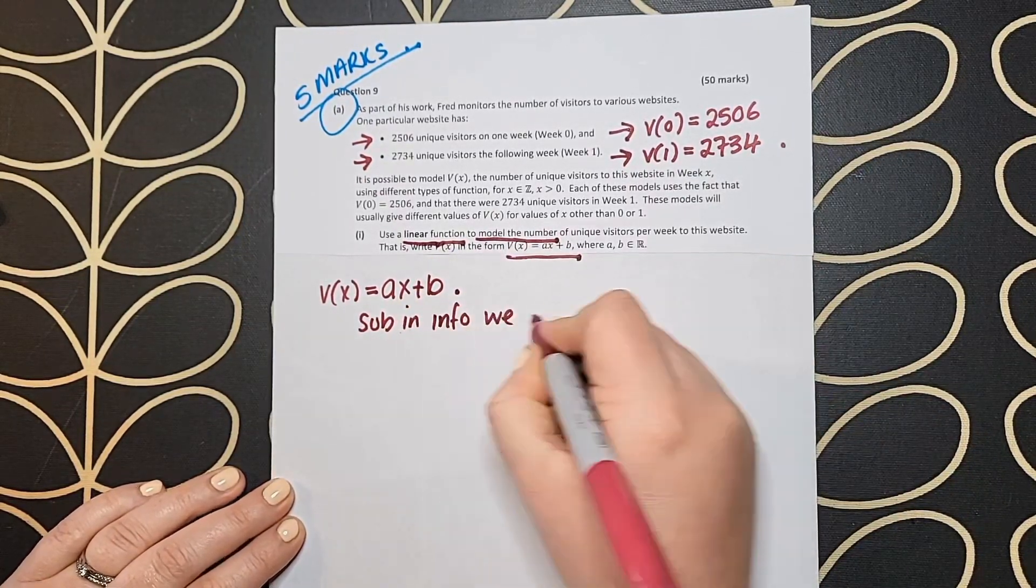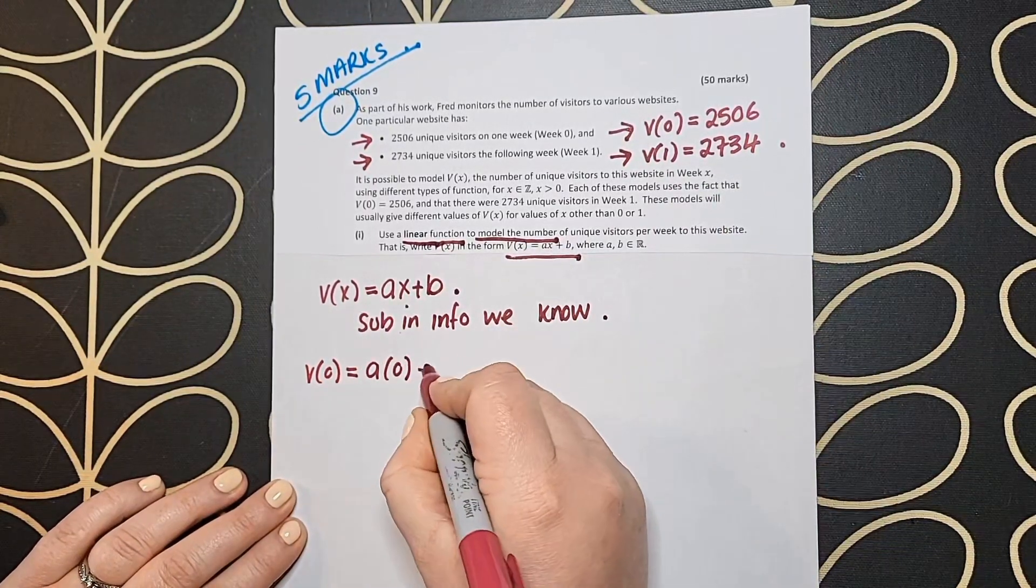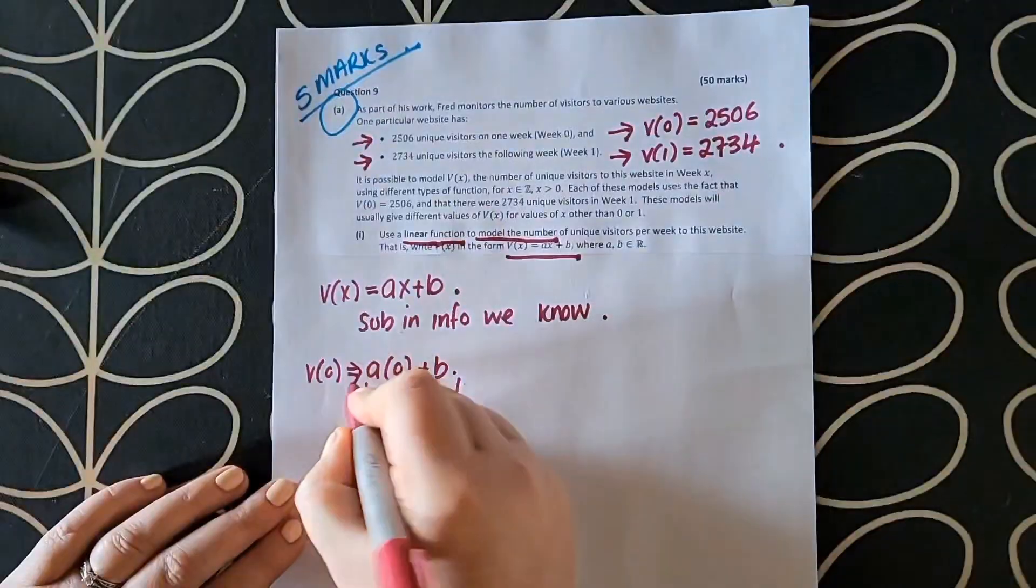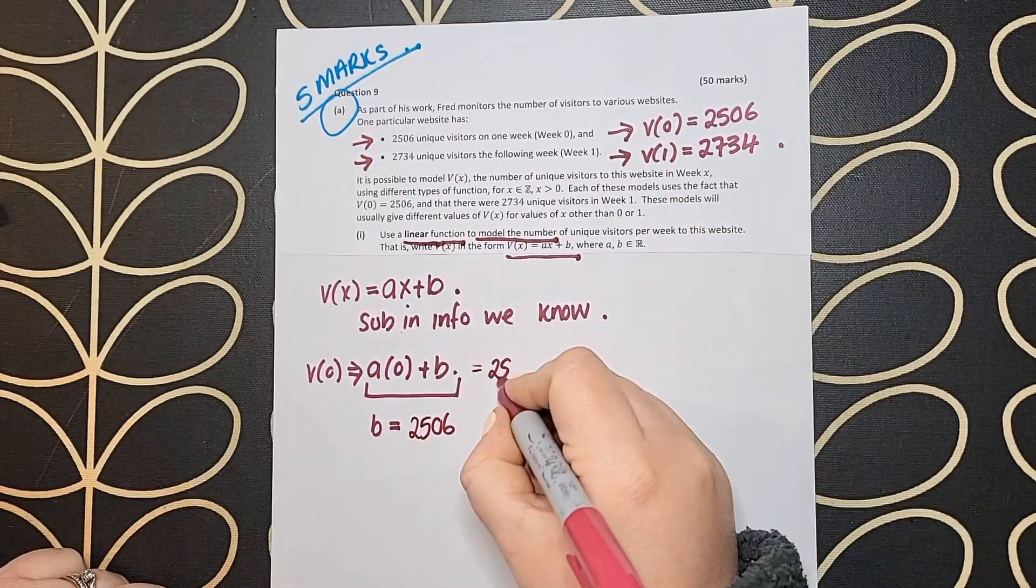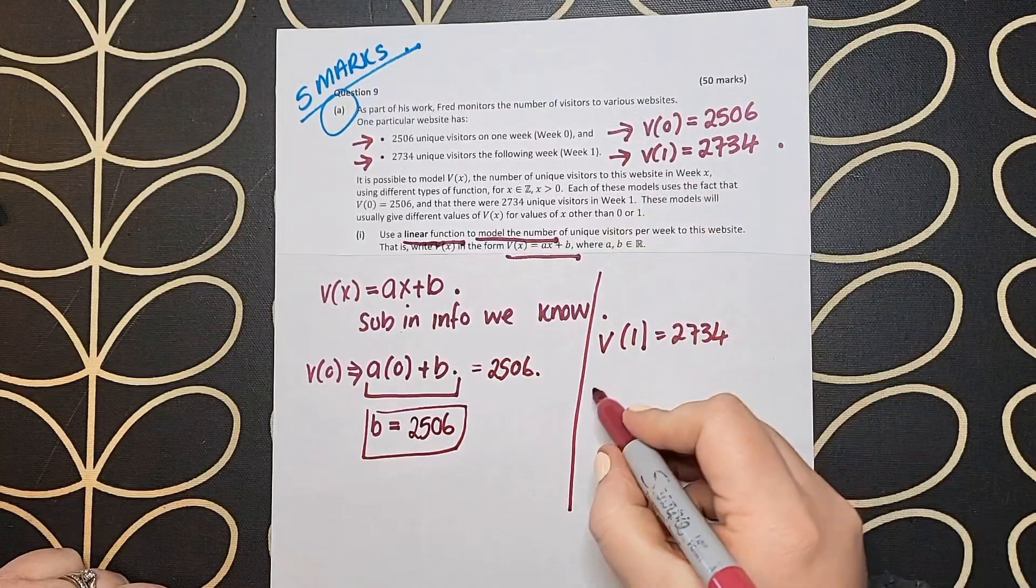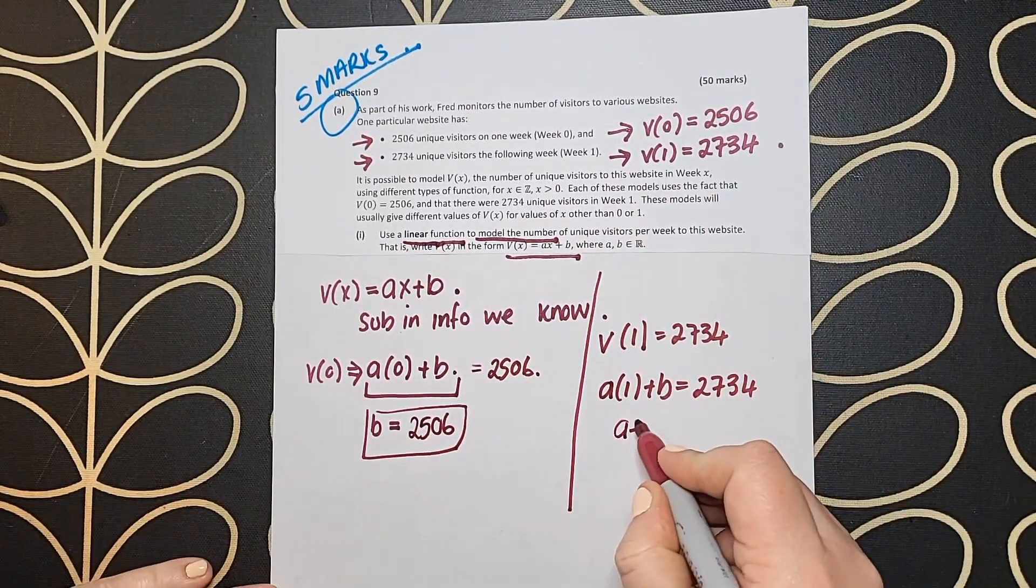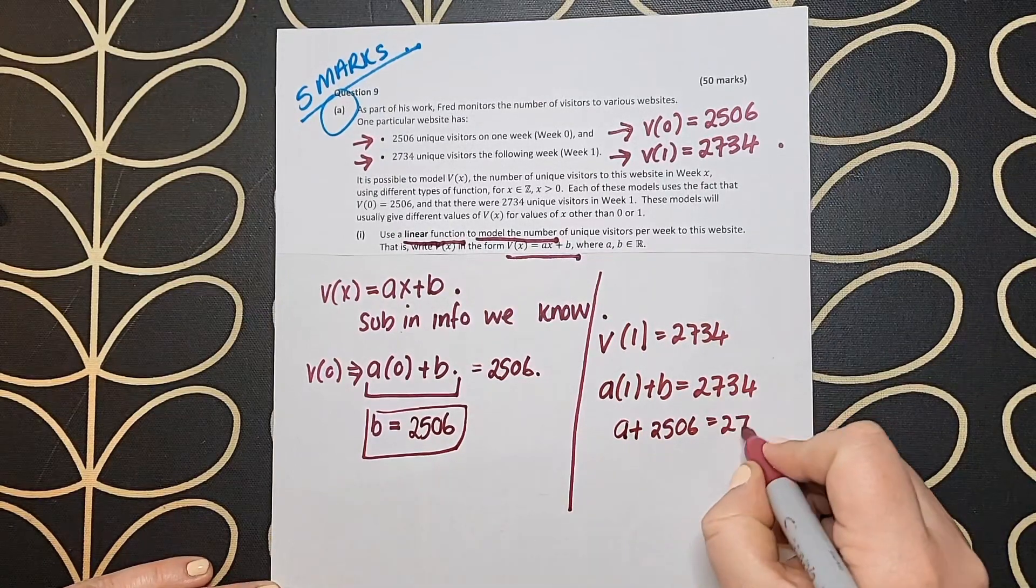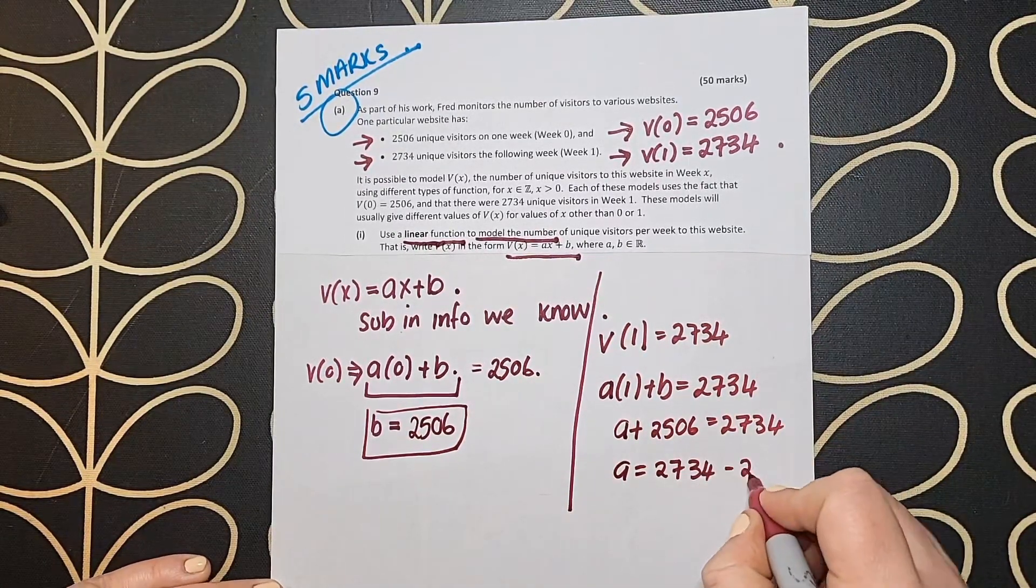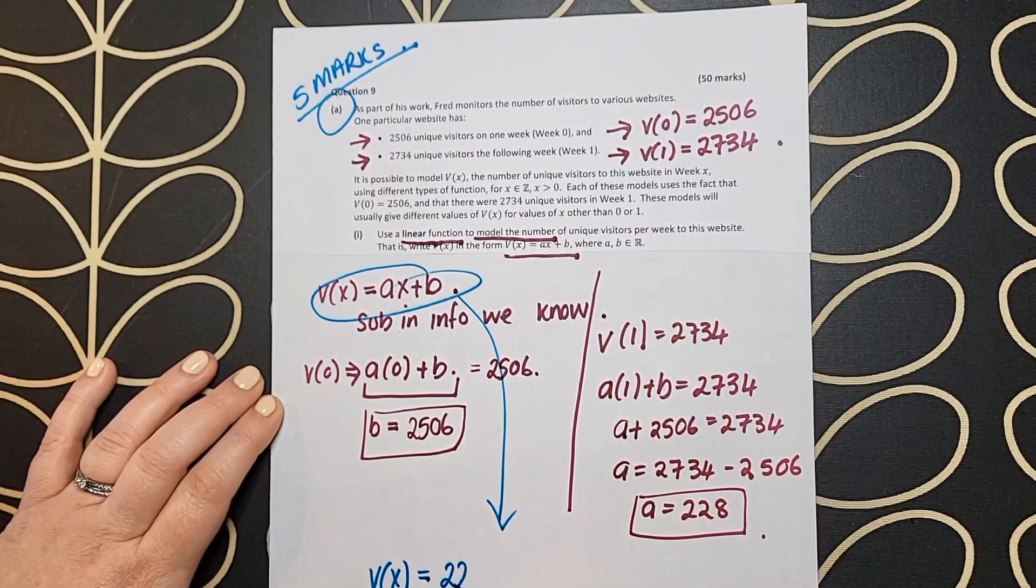To create that, we sub in the information we know - v(0) and v(1). When we sub in 0 for x, we find that b = 2506. When we sub in v(1), we find that a = 228. We take that a and b value and sub it into the original to get our function for v(x).